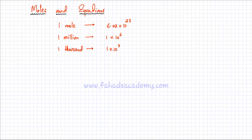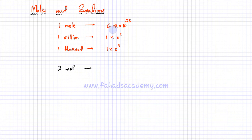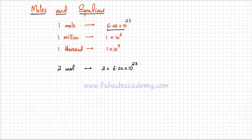Atoms are present in a very, very large number. So understand that a mole is simply a unit for counting atoms. If you have 2 moles of a particle, that would mean 2 multiplied by 6.02 × 10²³. I hope you're familiar with what a mole stands for. You can go back and revise topics related to moles and converting moles to numbers and numbers to moles. Now we're going to move towards chemical equations.